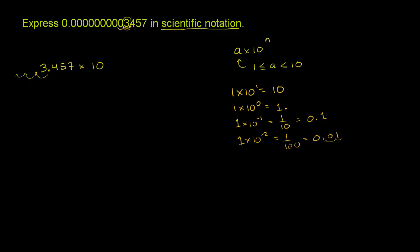So we have to move it one time to get the 3. So if we started here, we're going to move 1, 2, 3, 4, 5, 6, 7, 8, 9, 10 times. So this is going to be 3.457 times 10 to the negative 10 power.